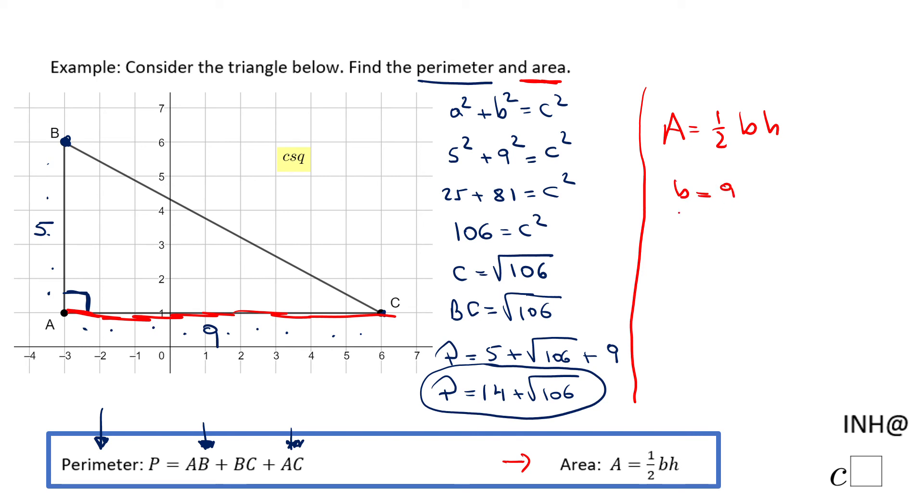So the base is 9 and this will be the height. Now since this is a right triangle we can switch them; that's not a problem in this case.